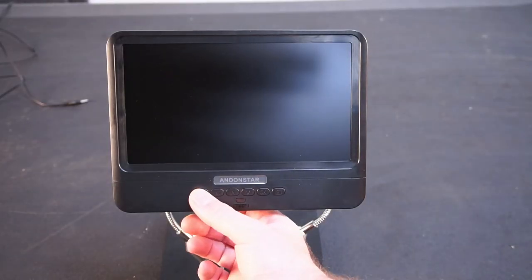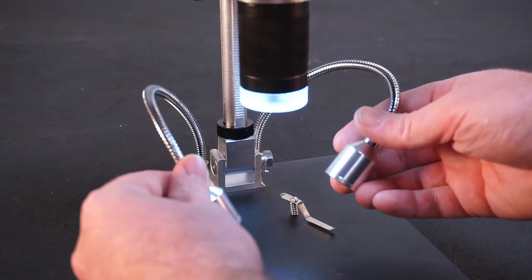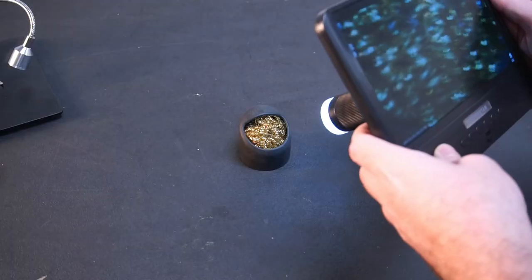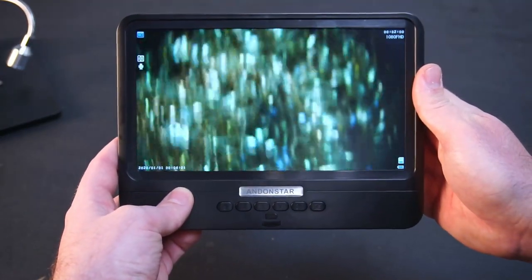The only downside is the flexible LED spotlights can't run off the battery, however the LED ring light on the camera does run off the battery. This does give you the option to use the scope in the field, when a power adapter might not be an option.